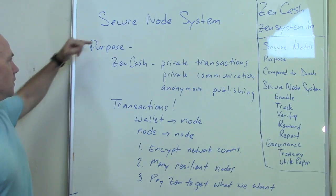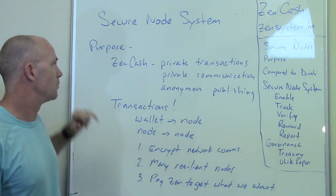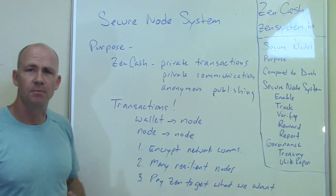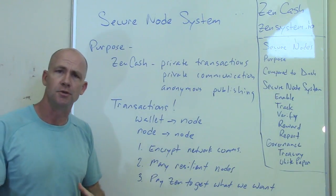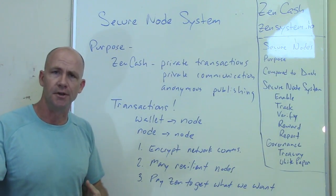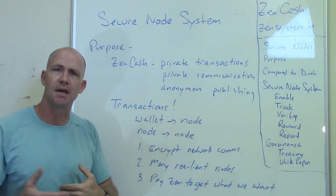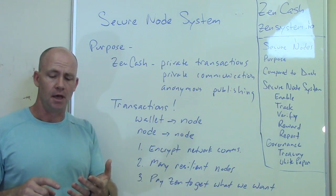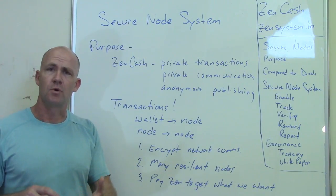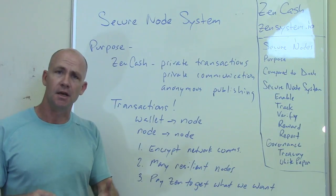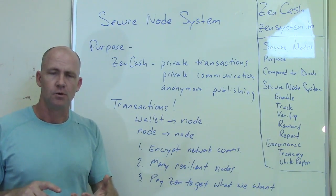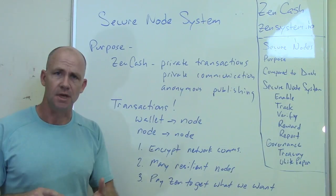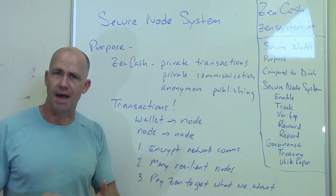Let's go back to the purpose of ZenCash. One of the things that we want to do is enable private transactions for people worldwide. This uses shielded transactions, so people can send and receive ZenCash and it doesn't record in the blockchain who sent it, who it was sent to, or how much was sent — just that a transaction happened.